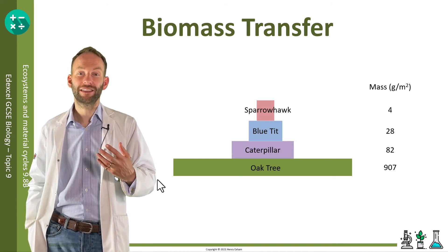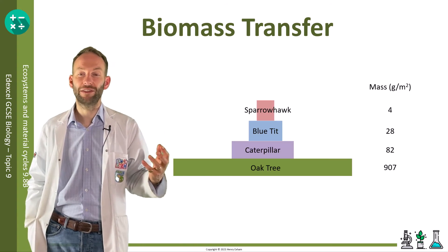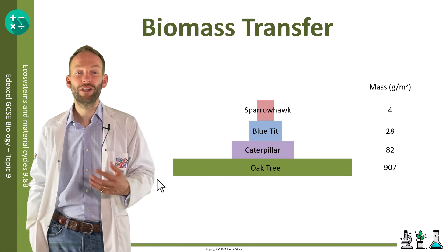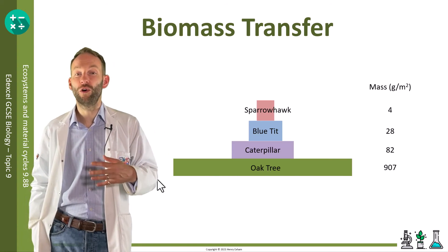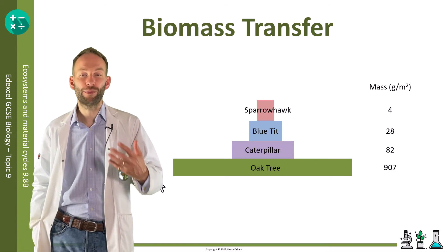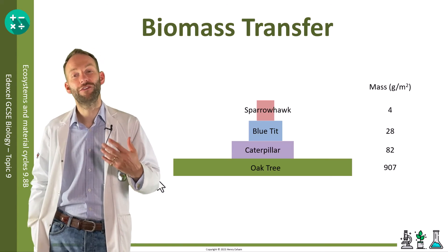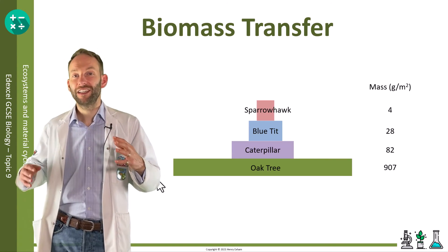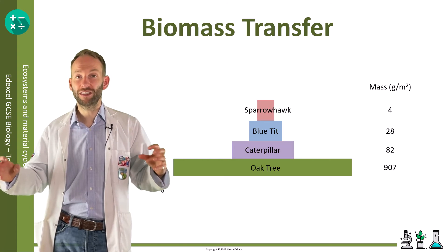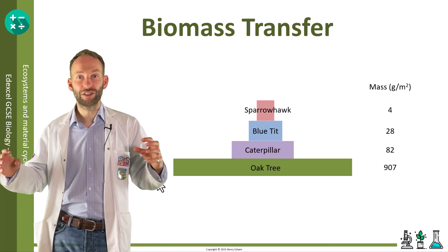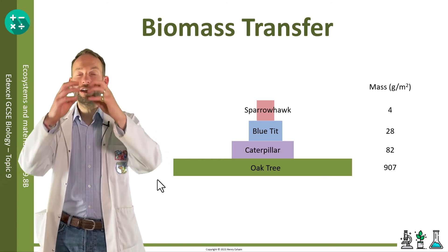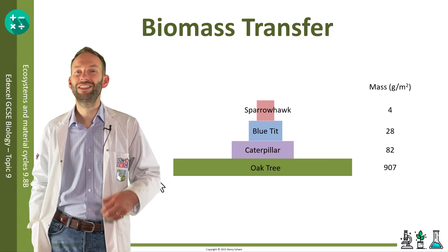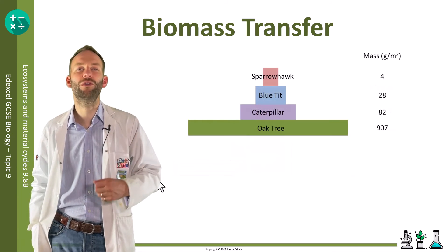The reason it has a pyramid shape is because of the energy lost at each trophic level, meaning less gets stored as biomass. Because of this loss of energy at each level, a food chain tends to be no more than four, or maybe five at a push, trophic levels. By that point, from the original energy in the producer, there's so little that can be passed on to the top level that it just can't support any more organisms.